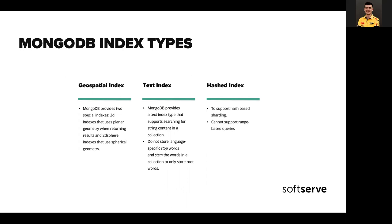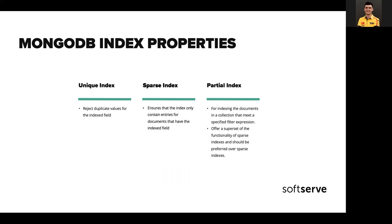The last one, and in my view rarely used, is a hashed index. It's needed if you are using the full advantages of MongoDB and need to boost your queries across shards — of course, if you are using hash-based sharding, and there are normal cases to use it. So that's it for index types; let's have a look at index properties.